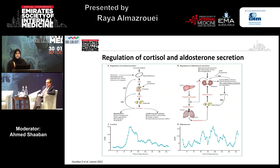It is important to understand that the regulation of cortisol secretion is under the HPA axis — the hypothalamic-pituitary-adrenal axis. CRH secreted from the hypothalamus will stimulate the corticotrophic cells in the anterior pituitary to produce ACTH, which will then stimulate the adrenal to produce cortisol. Cortisol has a negative feedback on both ACTH and CRH secretion, while aldosterone secretion is under the RAS system regulation — only 10% of it is under ACTH stimulation.